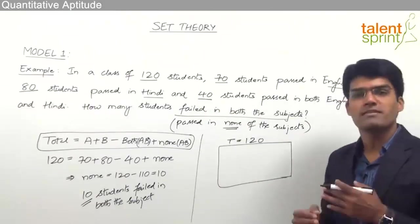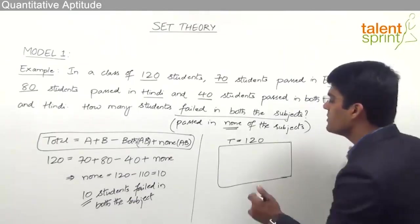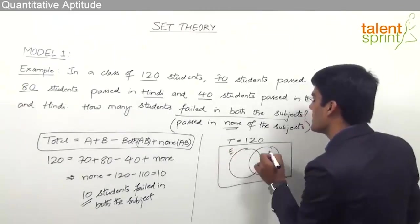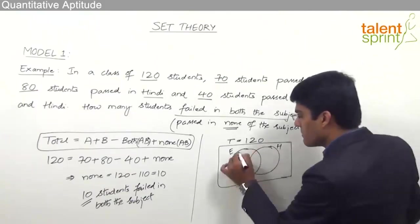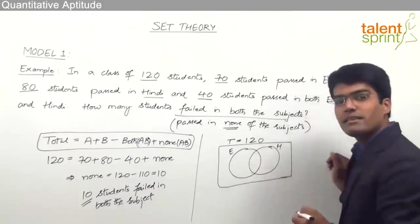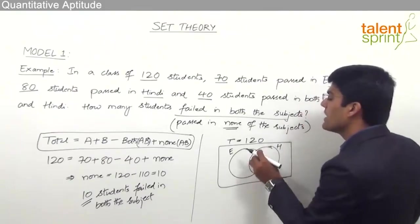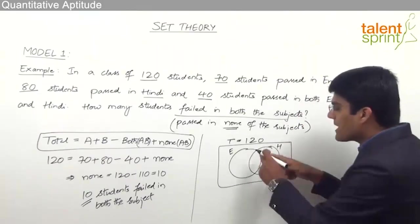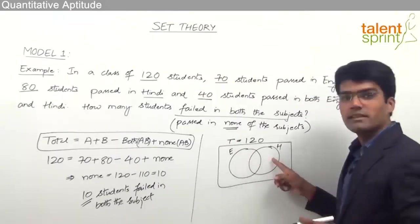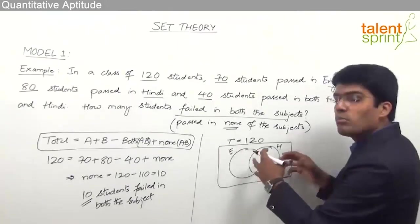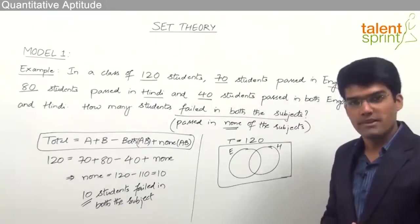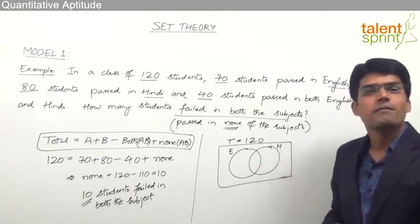Since 40 students passed in both subjects, there will be some overlapping between these subsets. Let us draw English and Hindi with small circles. The first circle is for English and the second one is for Hindi. The complete English circle represents students who passed in English; the complete Hindi circle represents students who passed in Hindi. The intersection region shows students passed in both. The area outside both circles represents students who passed neither in English nor in Hindi — those who failed in both subjects.